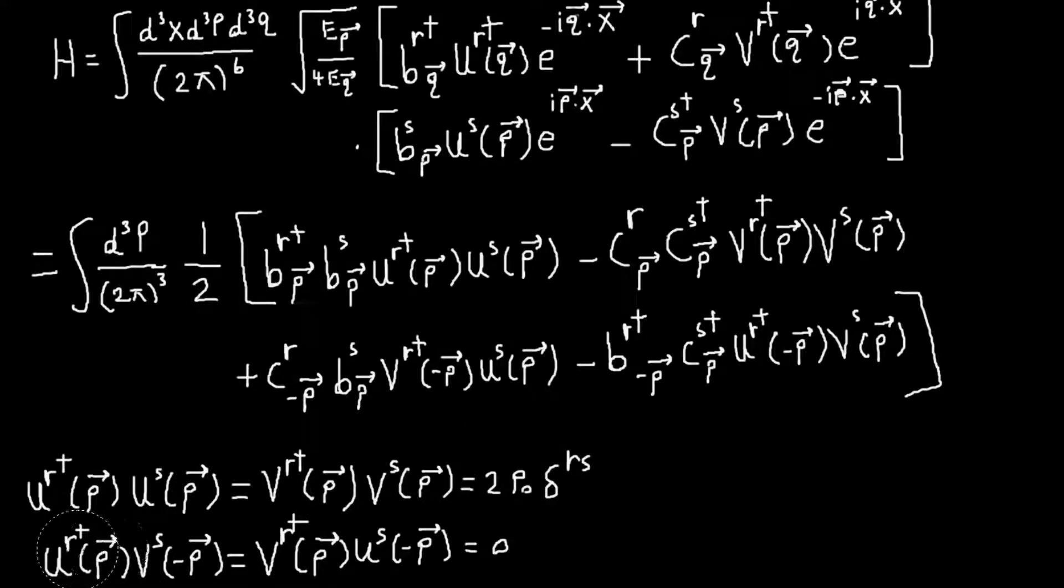And then when we have u_r dagger of p times v_s of minus p, that will be 0. And then similarly for the other order of things. So basically, these two terms go away.